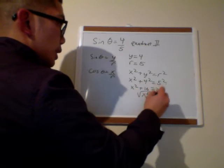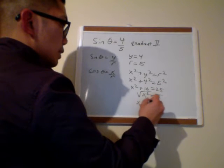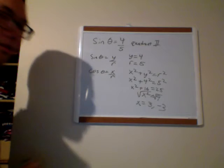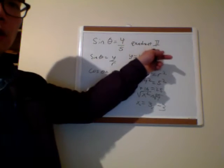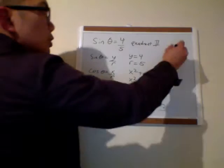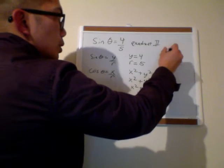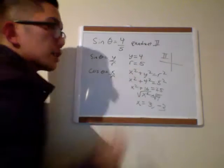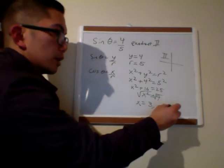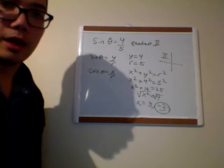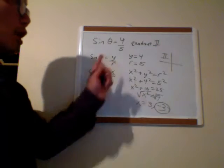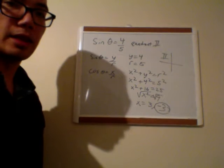When I take the square root of both sides, I get two answers: x equals 3 and negative 3. However, this is where the quadrant helps me. I'm in quadrant 2, and if you're in quadrant 2, your x values are negative. So my correct x value is negative 3. So I have y is 4, r is 5, and x is negative 3.